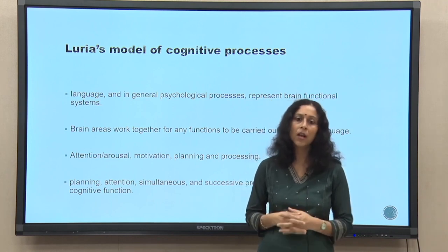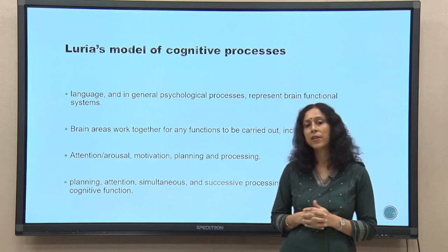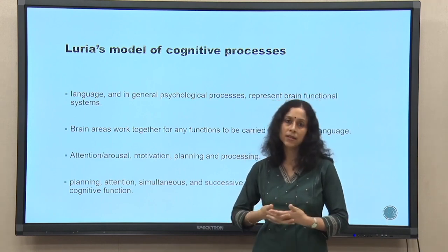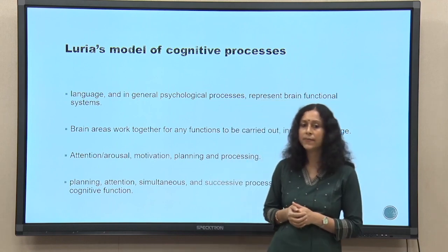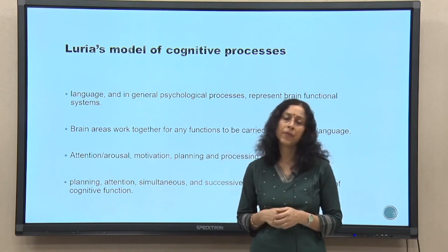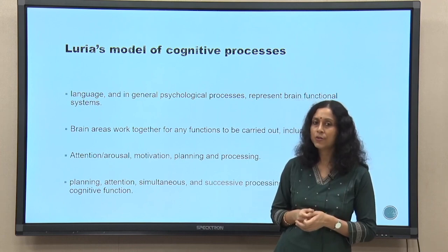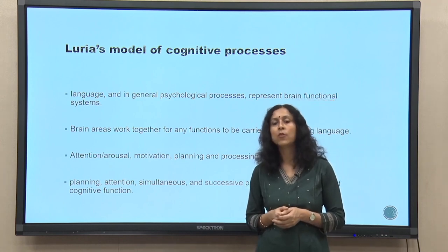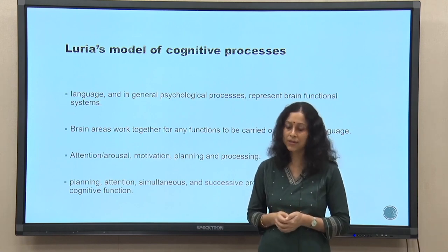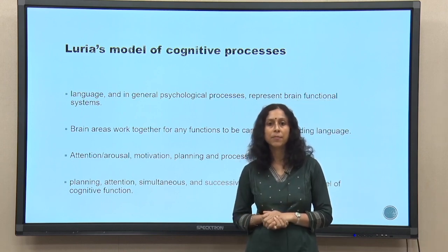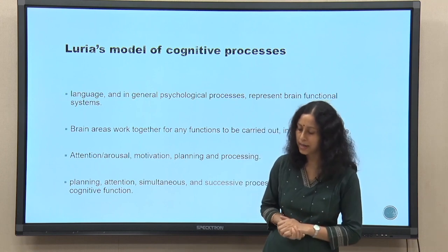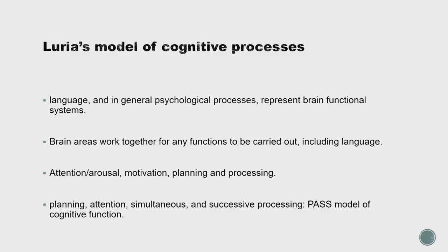Various brain areas work together for any particular function to be carried out, including language. He says that different brain regions and different neuronal networks come together to carry out one single mental function. He identifies attention, arousal, motivation, planning, and processing as the finer aspects of that process. Though this model was not given by Luria himself, it is based on his understanding — it came slightly later from Naglieri and Das, who created the PASS model.